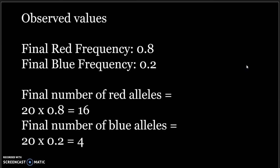To get the observed values, multiply the final frequency by 20. The final frequency for red is 0.8, so the final number of red alleles is 16. The final frequency for the blue allele is 0.2, so the final number of blue alleles is 4.